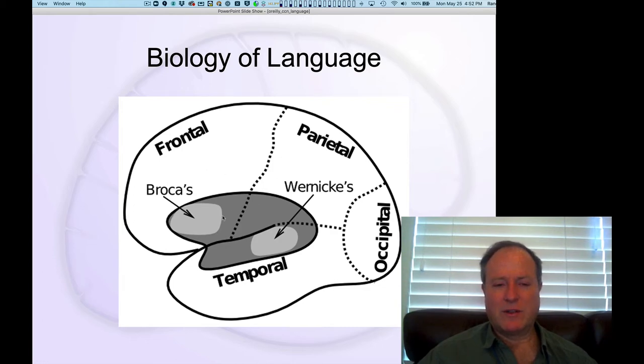This idea that Broca's area here in the frontal lobes is important for syntax and speech production. Wernicke's area, in contrast, is where you have semantics and understanding of the meaning of words. So this kind of syntax-semantics dissociation, very simplistically represented in different areas of the brain.